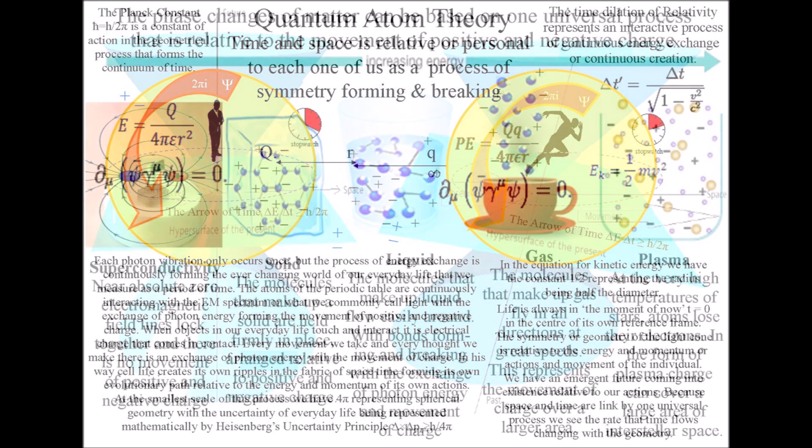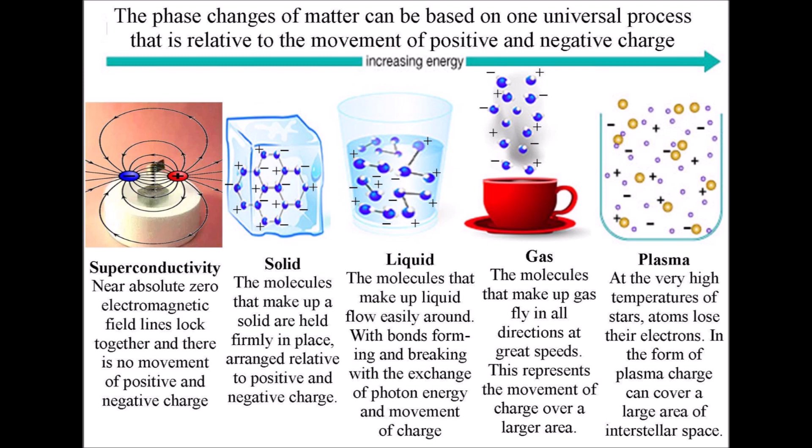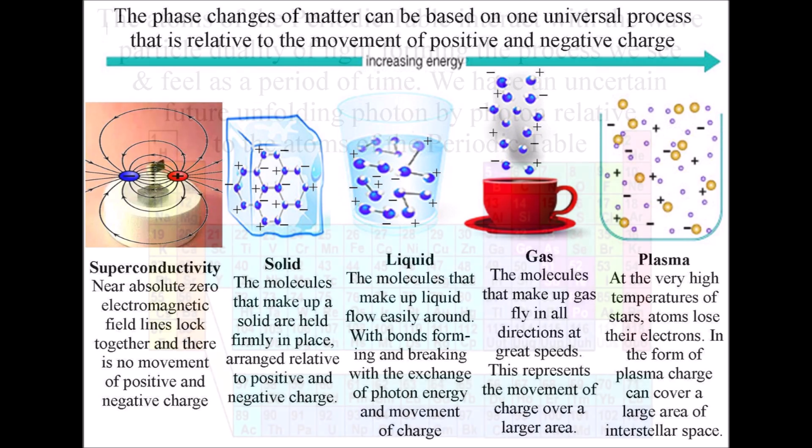It is because this process is relative to temperature that we can have the same process on the very large scale in the form of plasma and at the very short scale relative to the atoms of the periodic table.